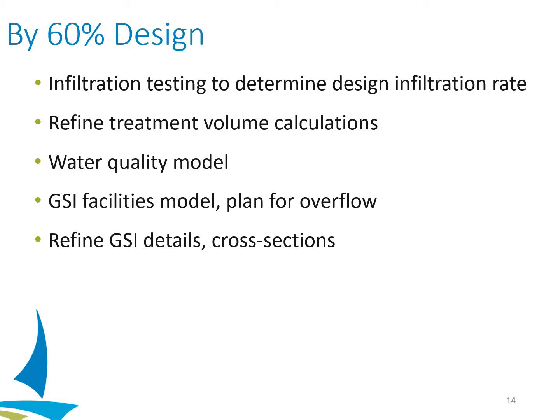So above what the design storm was — do we have an overflow plan or can the facilities handle larger events — and start refining those details and cross sections. Then 90% and 100% will be that same refining point, making sure we're taking into account any unexpected issues that have come up closer to construction, like utilities, or perhaps bedrock or high groundwater, and that we're able to adjust and still meet the ordinance requirements.